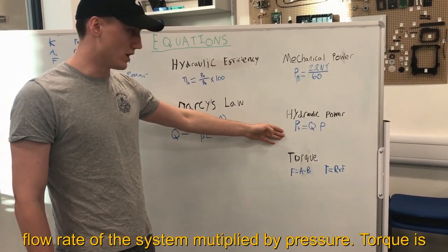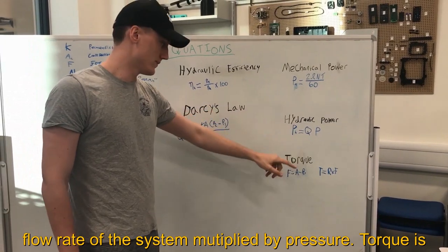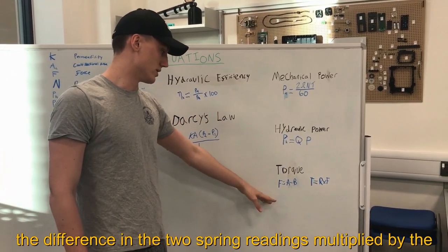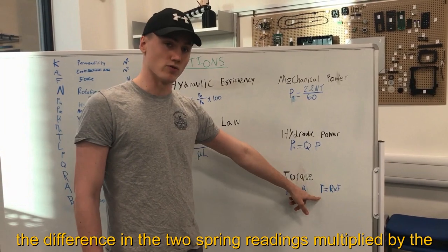Hydraulic power is the flow rate of the system multiplied by pressure. Torque is the difference in the two spring readings multiplied by the radius.